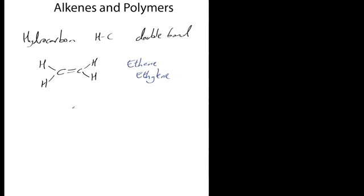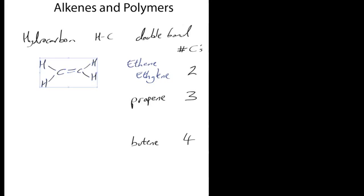The next molecule in the series starts with 'prop-', as you may remember from propane in the crude oil tutorial, so this should be propene. The one after that is butene. So the number of carbons is two, three, and four respectively.